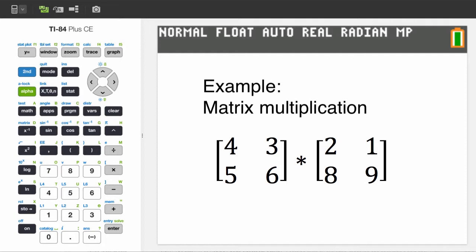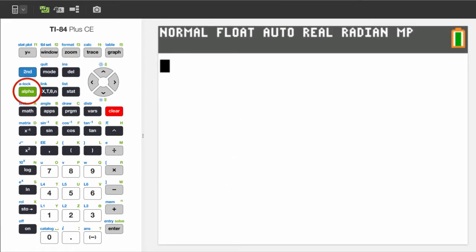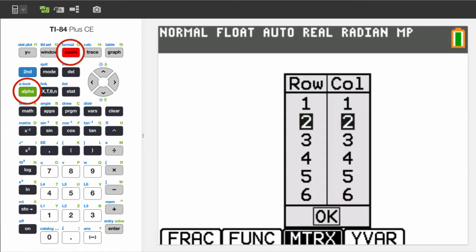Suppose you want to multiply these two matrices. Begin by pressing the alpha key, then press the zoom key. Now this pop-up menu will let you specify the dimensions of the matrix using the directional arrow keypad and the enter key.